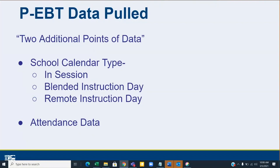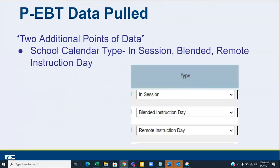We are pulling two additional critical data points. First, the school calendar type — in-session, blended instruction day, or remote instruction day — which tells us what is happening in that building. Second, attendance data. Both of these directly determine the amount of money a family may receive. I've provided examples from the calendar setup screen in PowerSchool because that tells us what is happening in that building on any given day.